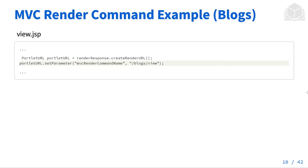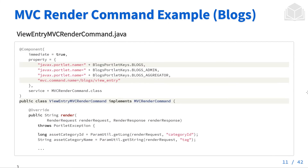Looking at an MVC render command example, inside view.jsp we have portlet URL dot set parameter, setting the parameter MVC render command name to /blogs/view. We do something similar in the ViewEntryMVCRenderCommand, specifying the portlet it is tied to and the MVC command name /blogs/view_entry. The class is named ViewEntryMVCRenderCommand and it implements MVCRenderCommand.